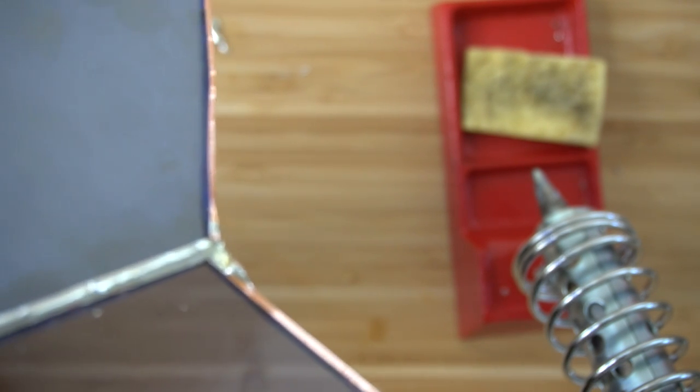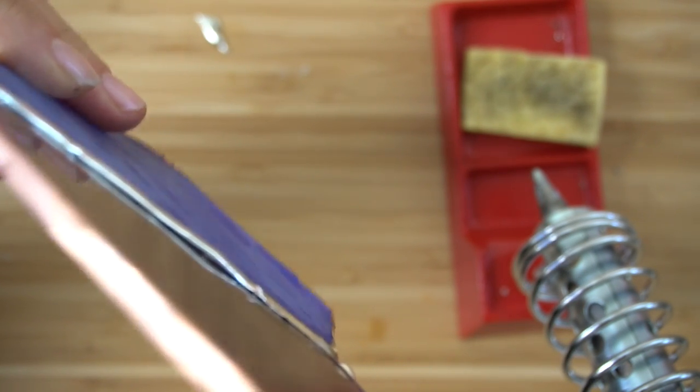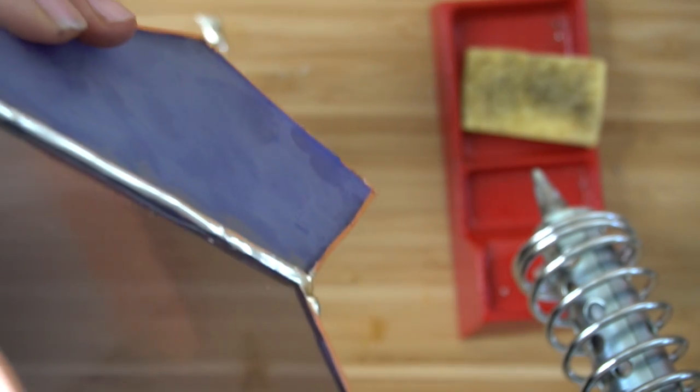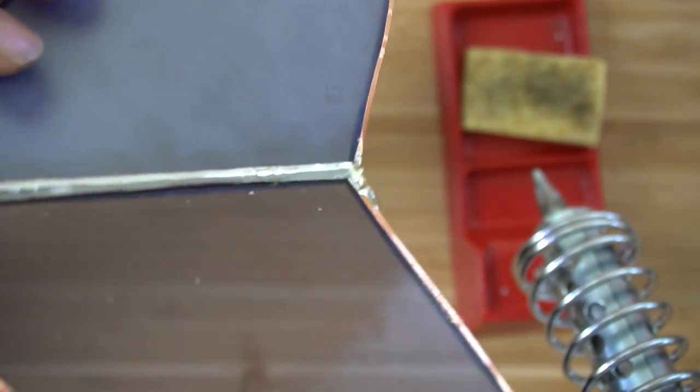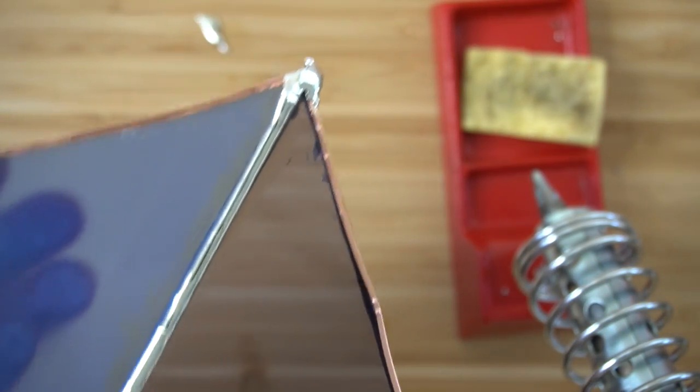That's a problem with your copper foil. You need your copper foil to be really smooth on your glass before you get started and you can avoid doing that. But overall, that is how you connect stained glass.